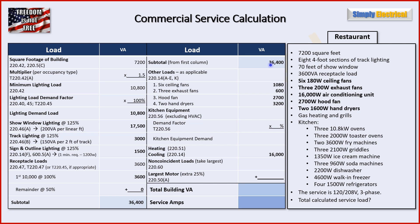We slide that subtotal over to the next column and take our other loads. We have six 180-watt ceiling fans — 1,080 VA; three 200-watt exhaust fans — 600 VA; a 16,000-watt air conditioning unit, which we'll drop down under cooling for the non-coincident load comparison; a 2,700-watt hood fan; and two 1,600-watt hand dryers — 3,200 VA. The hood fan is in the kitchen, but per 220.56, any HVAC — heating, ventilation, or air conditioning — is excluded from kitchen equipment and goes here under other loads.